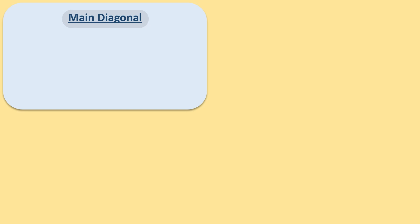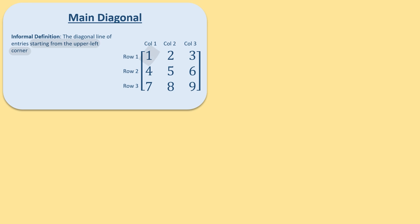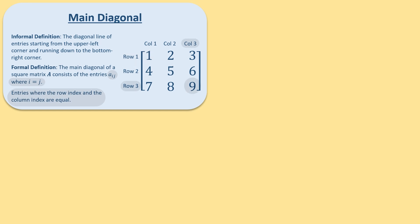The main diagonal of a square matrix is the diagonal line of entries starting from the upper left corner down to the bottom right corner. Formally, the main diagonal of a square matrix A consists of the entries A sub i j where i is equal to j — the entries where the row index and the column index are the same.